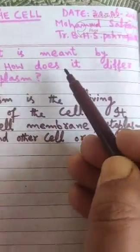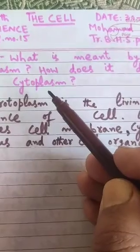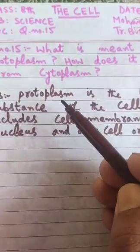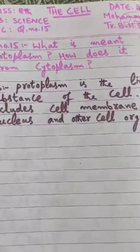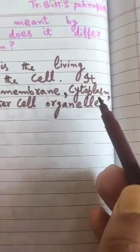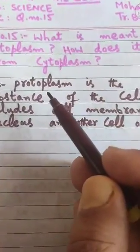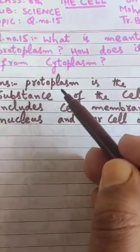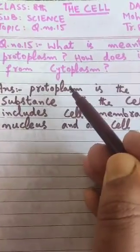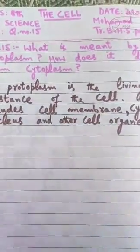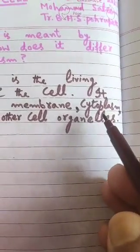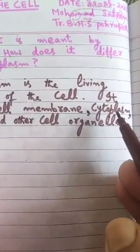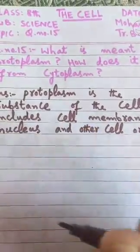Now we have the second part of this question: how does protoplasm differ from cytoplasm? We can say that cytoplasm is a part of protoplasm. Protoplasm is a broader term, while cytoplasm is a smaller or narrower term. Let us differentiate between cytoplasm and protoplasm.